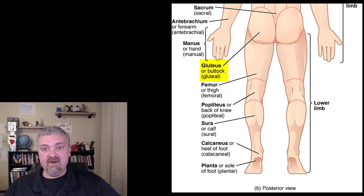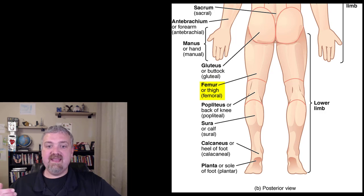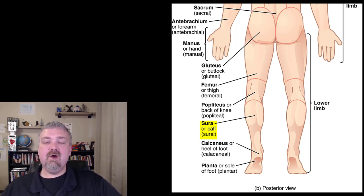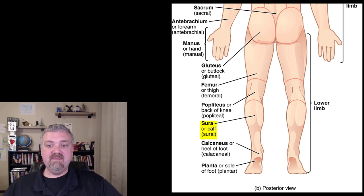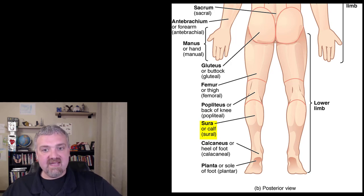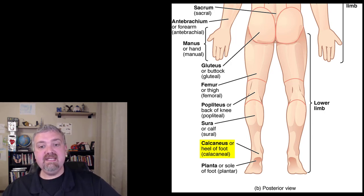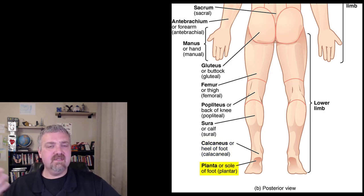Your buttock area is called the gluteal region — that's going to be where your gluteus maximus muscle is. The femoral region is the same on the front and the back. The front of the knee was called the patella; the back of the knee is called the popliteus, and that's where the popliteus muscle is. Your calf is called sura. There is something called the triceps surae, which is your soleus muscle and the gastrocnemius muscles — all your calf muscles as a group are called the triceps surae because the back of the calf is called the sura. Your heel is called the calcaneus. People talk about the Achilles tendon, but it's actually called the calcaneal tendon because it's attached to the heel. The plantar surface of your foot is the sole of your foot.